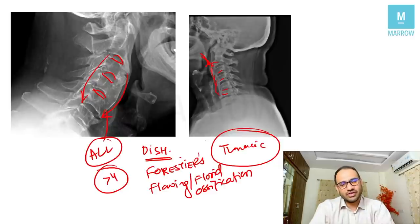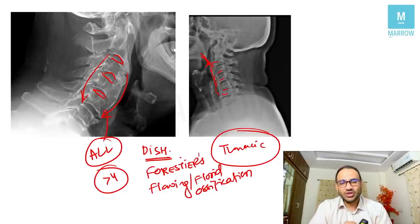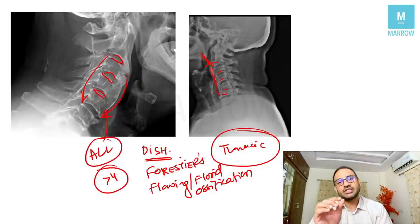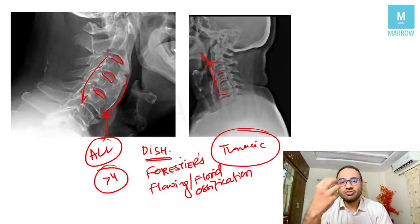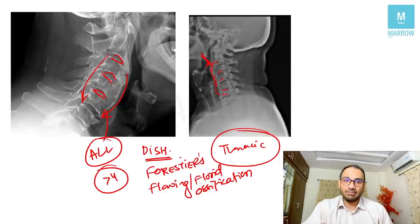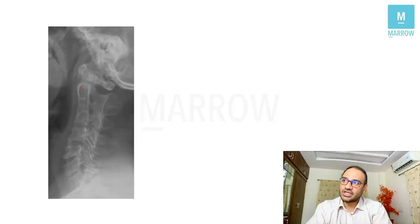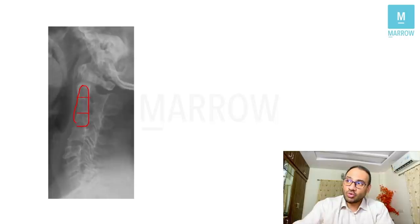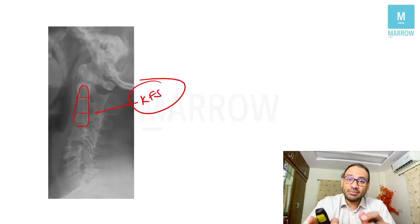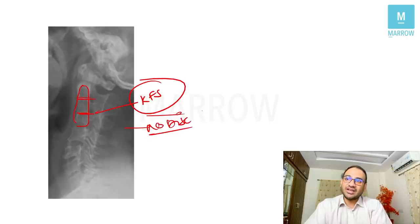Now look at Klippel-Feil syndrome. Here the vertebral segments are not segmented — there is no gap between them; they are unsegmented. Two or more unsegmented vertebral bodies is what is known as Klippel-Feil syndrome. Since there is no segmentation congenitally, it is a segmentation defect. Because there is no segmentation, there will be no disc visible — no disc, because congenitally there was no segmentation.